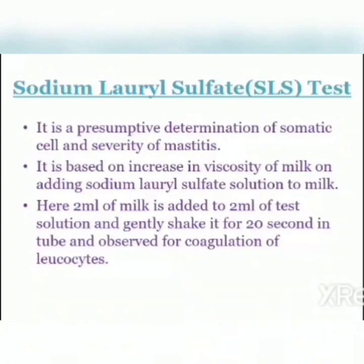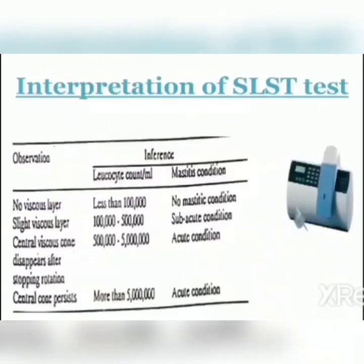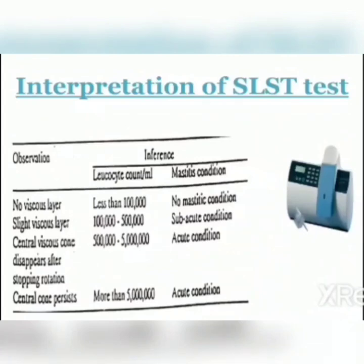The SLST test is based on the effect on viscosity of milk after adding sodium lauryl sulfate solution. Here, 2 ml of milk is added to 2 ml of test solution, gently shaken for 20 seconds, and observed for coagulation of leukocytes. If no viscous layer is present, there is no mastitis and leukocytes are less than 1 lakh. If there is a slight viscous layer, sub-acute mastitis is indicated with leukocytes between 1 lakh and 5 lakh. If a central viscous cone appears after stopping rotation, acute mastitis is indicated with 5 lakh to 50 lakh cells per ml. If the central cone persists after stopping rotation, cells are more than 50 lakh — also acute mastitis.